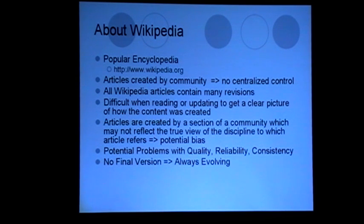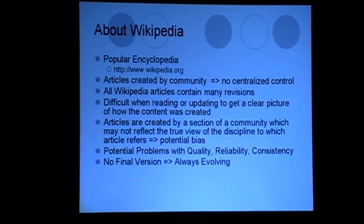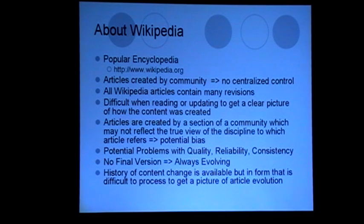Another important point to remember about Wikipedia articles is that they are an evolving, growing, changing thing. They are not static at all, so that means to understand how the knowledge is changing within an article requires a dynamic visualisation process. The history of the articles, the various revisions, who changed what, what was added, is available but in a log-like fashion, which is difficult to interpret and visualise.